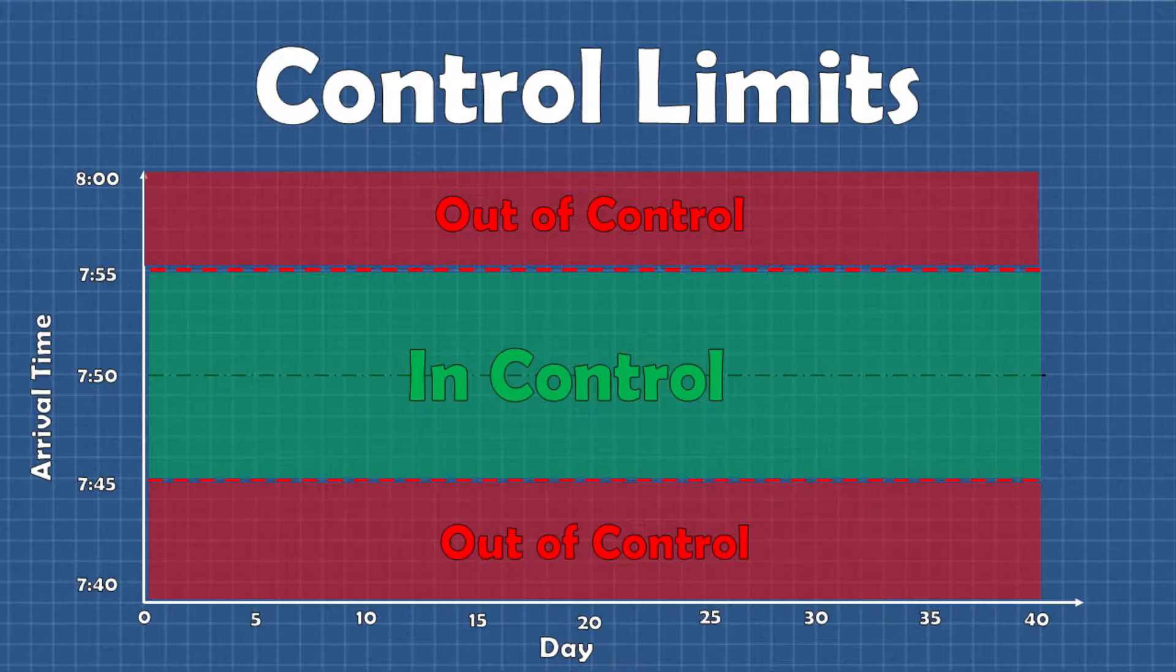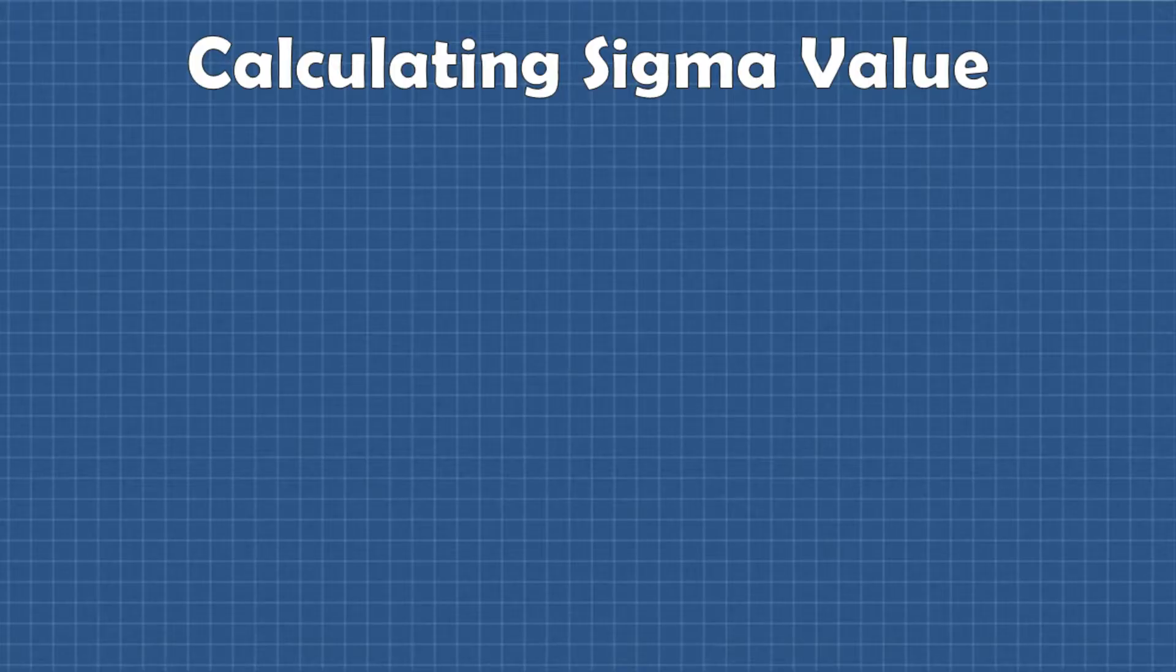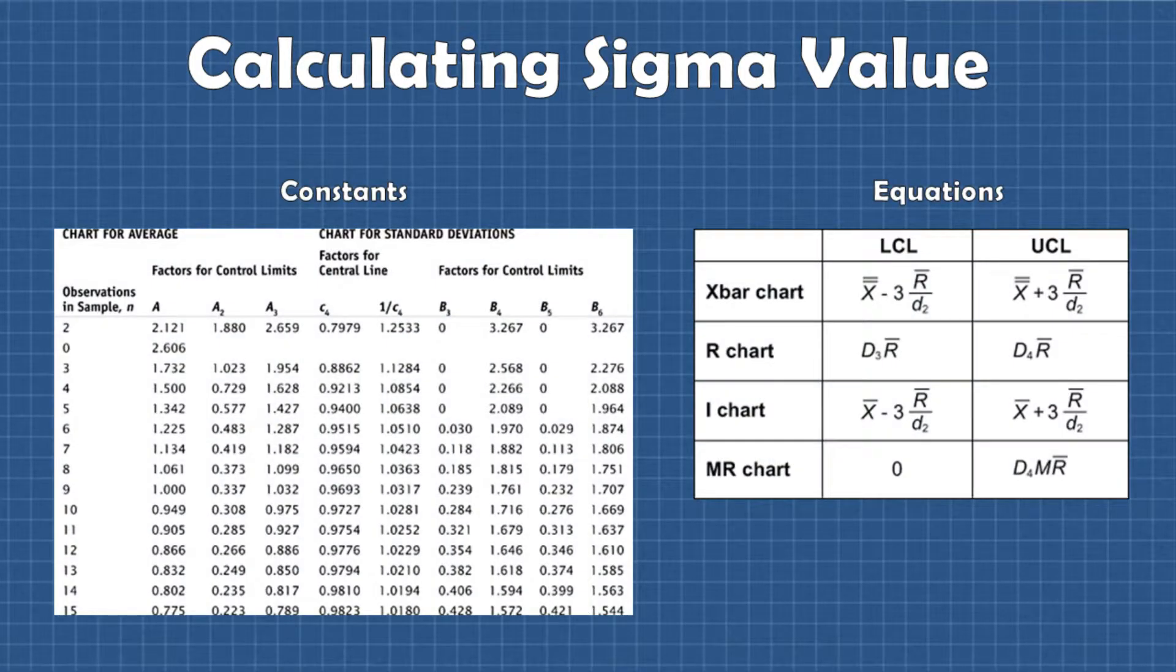It is very important to note here that we are not simply taking the standard deviation of all the data points to get our sigma value. That would not be correct. The sigma values we want to use are derived using different statistical constants and equations specific to the type of control chart being used. The simple or maybe not so simple explanation for this is that these equations and constants allow us to calculate the within subgroup variation or short-term variation of the process. Using the short-term variation allows us to get a better measure of the amount of common cause variation in the process.